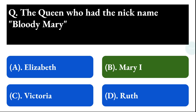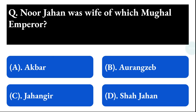Next question: Nur Jahan was the wife of which Mughal emperor? Option A: Akbar, option B: Aurangzeb, option C: Jahangir, option D: Shah Jahan. The correct answer is option C, that is Jahangir.